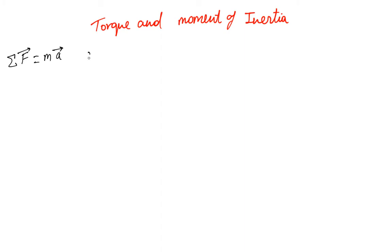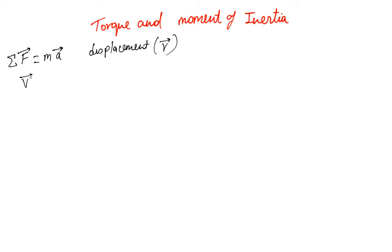This was the case when our variable was displacement. If displacement is mentioned as x or as r, a displacement vector, then v was dr/dt, the instantaneous velocity, and acceleration was dv/dt.